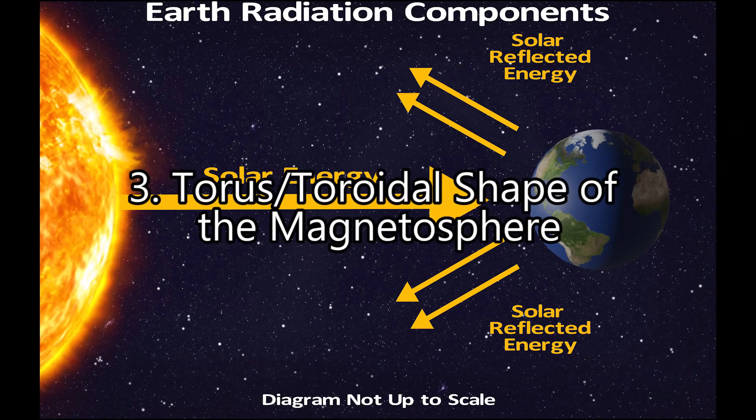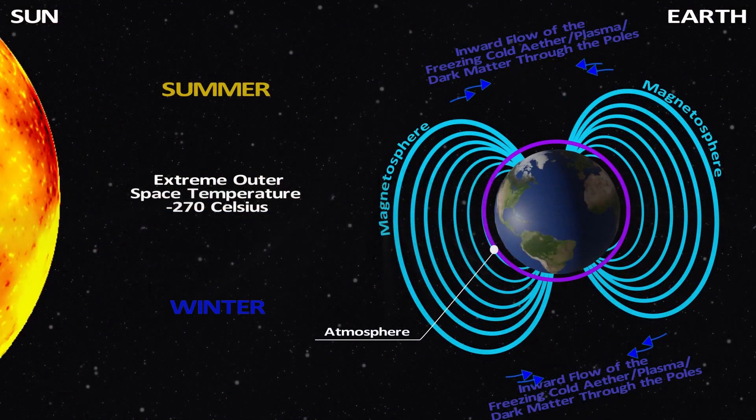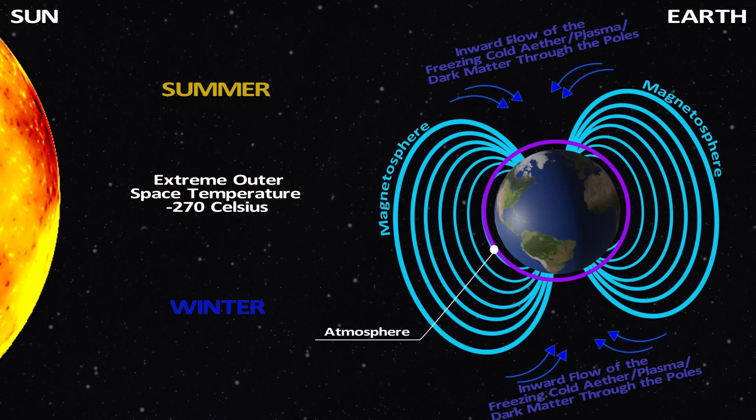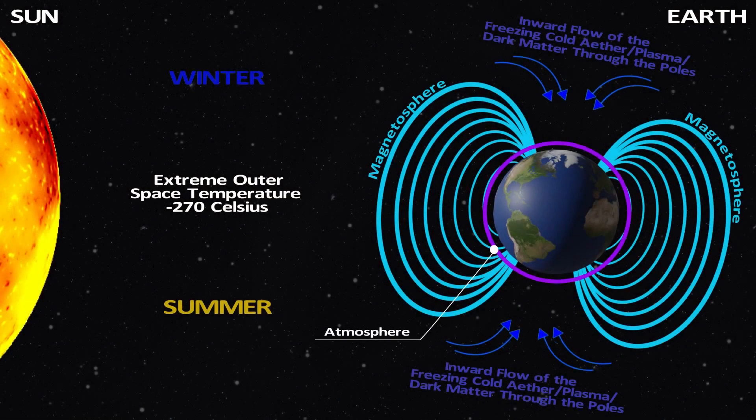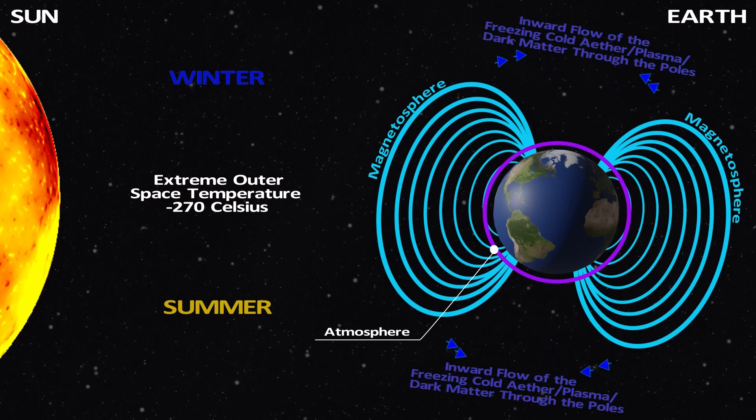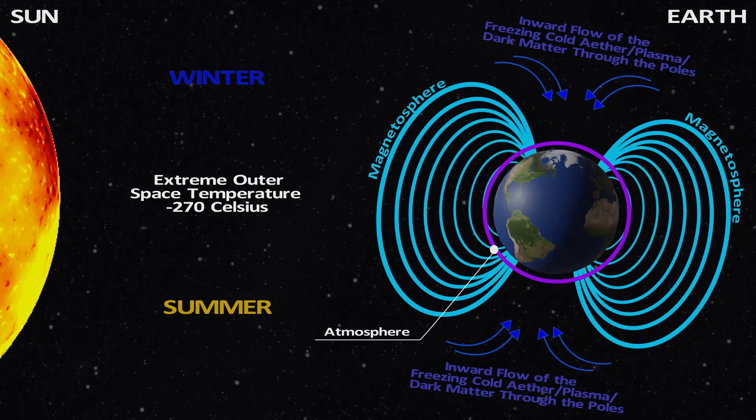And finally, the torus or toroidal shape of the magnetosphere. The toroidal shape of the magnetosphere keeps the pole regions exposed to the extreme cold, freezing temperatures of outer space due to the toroidal shape causing openings in the pole regions. Note that outer space or vacuum slash ether is very cold at temperatures of minus 270 Celsius or minus 454 Fahrenheit.